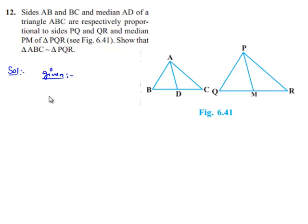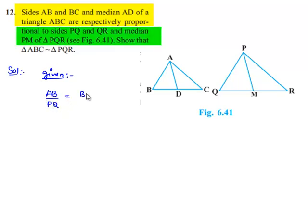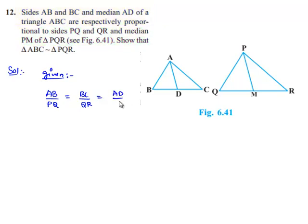So we can say AB by PQ is equal to BC by QR is equal to the median, that is AD by PM.